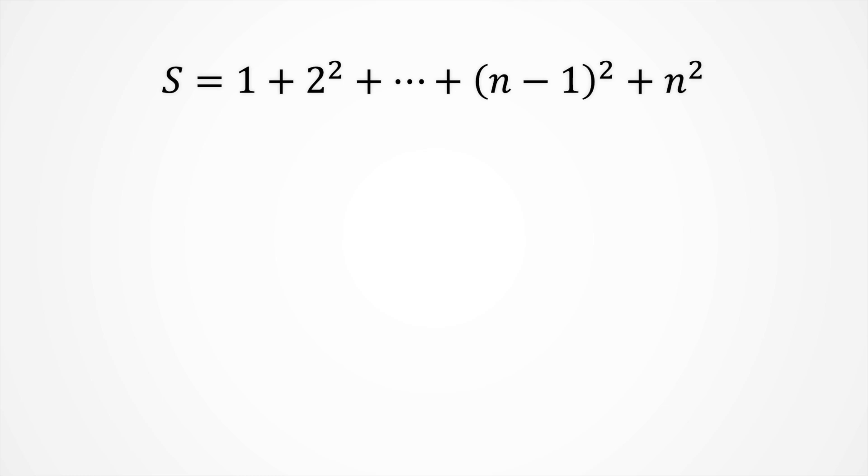We will call s the sum till the nth squared. As n determines how far we go adding the squares of natural numbers, we expect that s is a function of n. Thus, for any value of n, we get a single value of s.